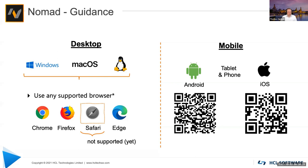On the desktop the story is different — there is no need to install anything. All you require is an operating system with a supported browser. As of today the browsers supported with Nomad Web are Chrome, Firefox, and Edge. Safari is grayed out and not yet supported due to a technical issue Apple is working on. If you're using any of the three major browsers you're good to go and could technically get started with Nomad Web today.